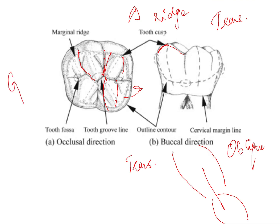Depressions would be grooves, pits, and fossae. Fossae are areas present towards the ends of the teeth - the mesial and distal ends. Pits are the deepest portion of developmental grooves. Grooves can be primary or accessory; primary grooves represent the areas of demarcation between developmental lobes, and the deepest portion of a groove is called a pit.